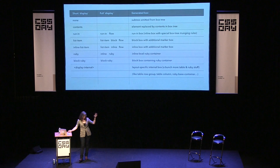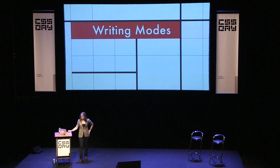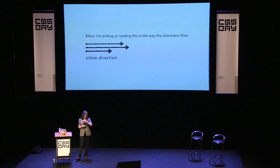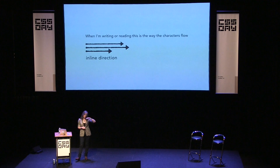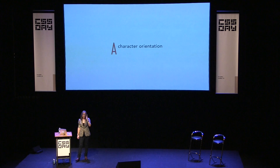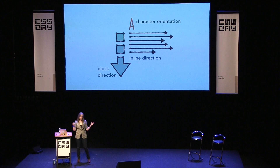So what does this have to do with writing modes? On the web, everything having to do with layout builds on the ideas of block and inline — they are the foundation of everything. Which direction does inline go? Which direction does block go? The writing mode specification lets you adjust and change what those two things do, which then has implications on everything else. Inline is the direction in which characters actually flow — the flow inside line boxes. The way block boxes stack is the block direction. There's also character orientation — which way is up for the characters themselves. Combine those three things and you get a writing system.